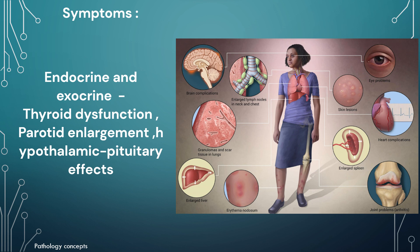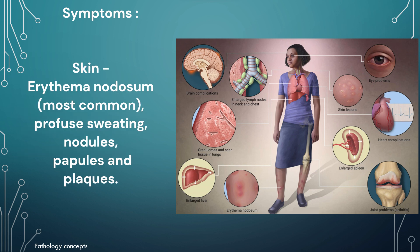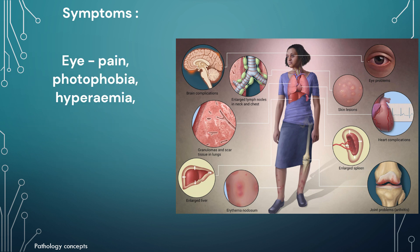Endocrine and exocrine involvement symptoms include thyroid dysfunction, parotid enlargement, and hypothalamic-pituitary effects such as diabetes insipidus. Skin involvement symptoms are erythema nodosum, profuse sweating, nodules, papules, and plaques. Eye involvement symptoms include pain, photophobia, hyperemia, and these are sometimes associated with Löfgren syndrome.